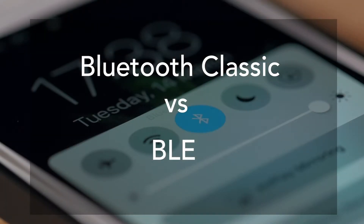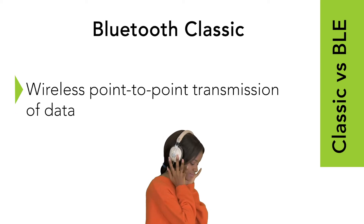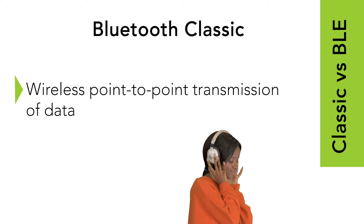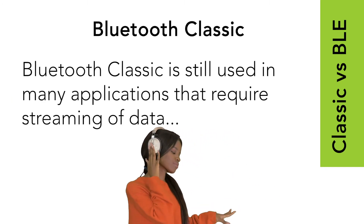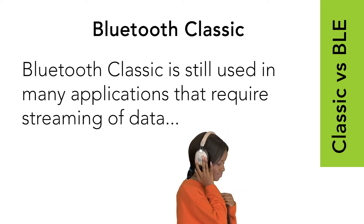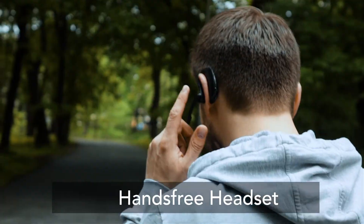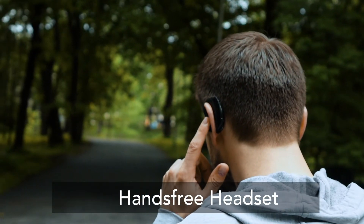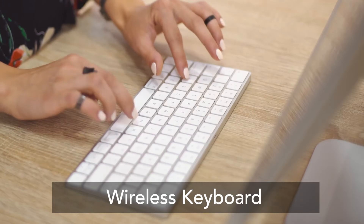Classic Bluetooth vs. BLE. Bluetooth Classic is the name of the older legacy version, which includes versions 1.0 through 3.0. Originally developed for wireless point-to-point transmission of data, Bluetooth Classic is still used in many applications that require streaming of data, such as a barcode scanner, hands-free headsets, portable speakers, and wireless keyboards.